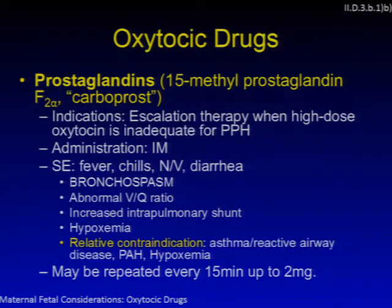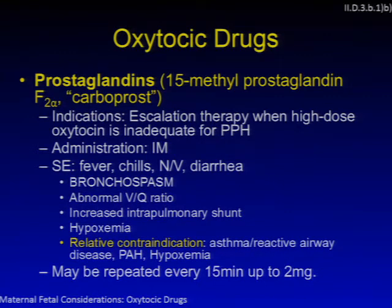Prostaglandins — 15-methyl prostaglandin F2-alpha — are indicated as escalation therapy when high-dose oxytocin is inadequate for postpartum hemorrhage. Given intramuscularly, side effects include fever, chills, nausea, vomiting, diarrhea, and most importantly bronchospasm. It is relatively contraindicated in patients with reactive airway disease or asthma, pulmonary hypertension, and hypoxemia. The dose can be repeated every 15 minutes up to a total dose of 2 milligrams.